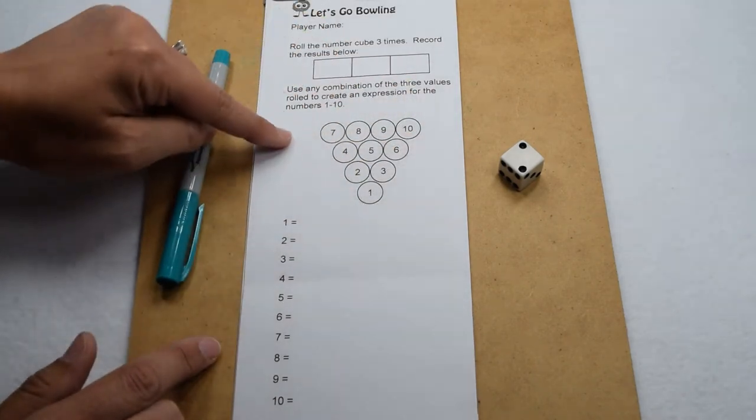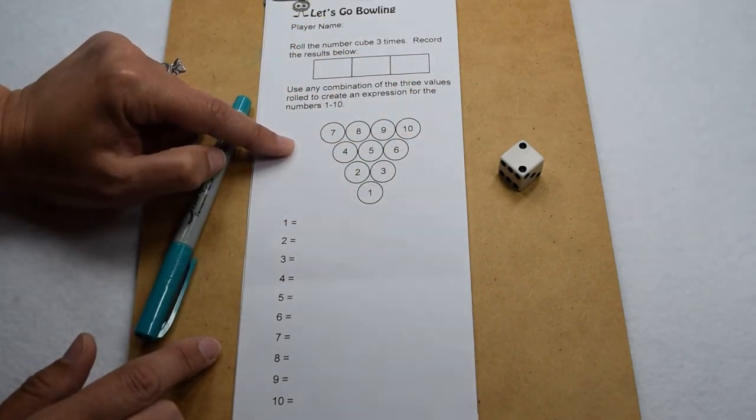The team that makes a strike by coming up with all ten values or comes closest to making a strike is going to be the winners. Let's see how this works.